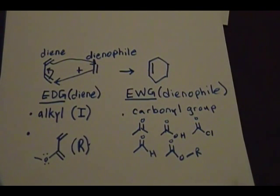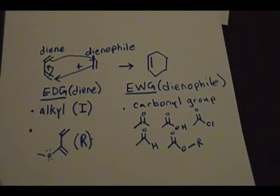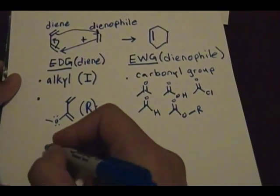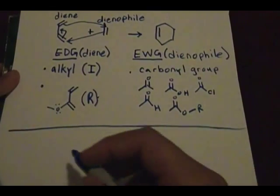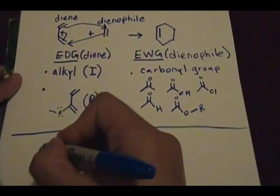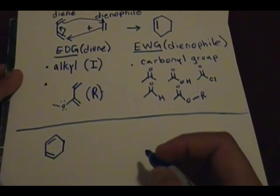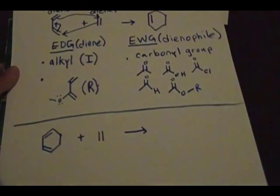Before going into examples, I want to show you another variation of the six-membered ring that you can form. This only happens when your diene is in a cyclic ring. If you have a cyclic diene reacting with a dienophile, it follows the same mechanism as before with no changes, just a different variation of the product. I'll get into that in the next part of this video, so please stay tuned.